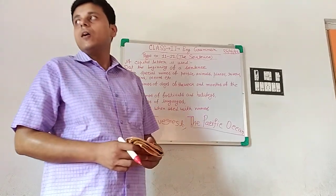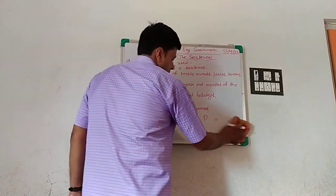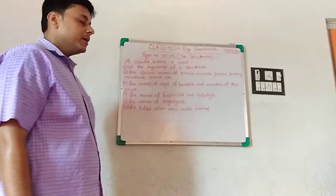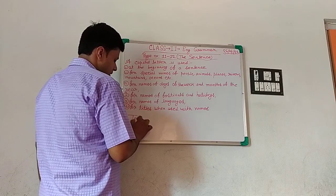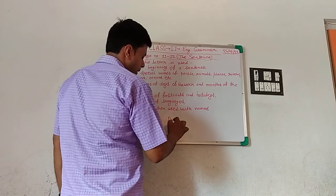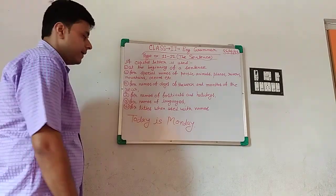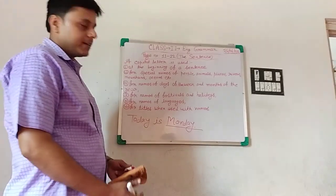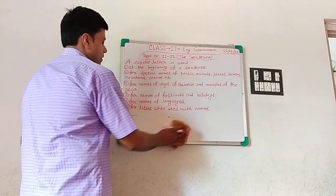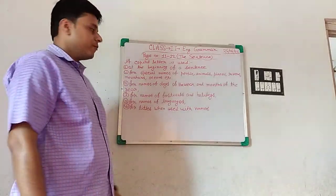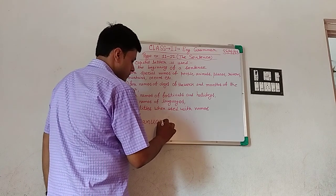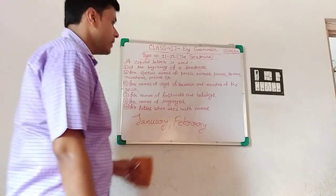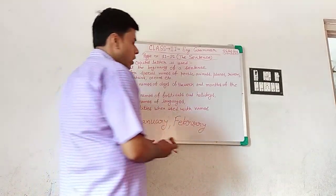The third rule: we use capital letters for the names of days of the week and months of the year. For example, today is Monday — always use capital letters for the names of days. There are seven days in a week. For months, for example January, February — always use capital letters for the names of months of the year.